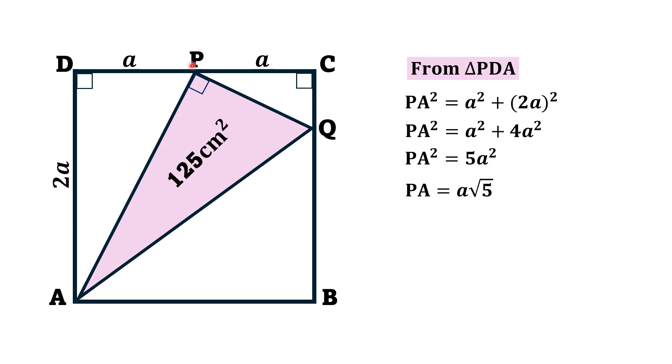This length PA is a square root of 5. Now, let we consider that the angle DAP, this angle is alpha and the angle DPA is beta. Now, this is a right triangle, means the sum of alpha and beta is 90 degrees.